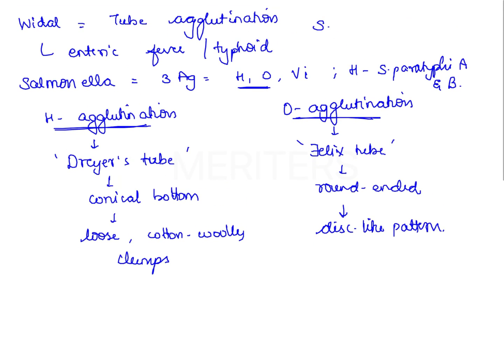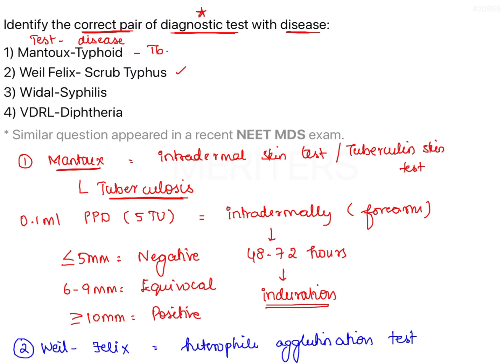The antigens for the Vidal test are obtained from the Salmonella typhi 901 strain. Therefore, the Vidal test is the diagnostic test for enteric fever (typhoid), and option 3 — which states Vidal test for syphilis — is a wrong combination.